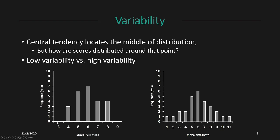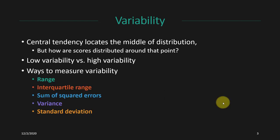In this example, we're looking at hypothetical data from rats, where we're looking at the number of attempts it took them to run a maze correctly. In one case, we have relatively low variability where the median score was 6 but scores only ranged from 4 to 8. In the other example, the median was also 6 but scores ranged from 1 to 11. So the measures of central tendency don't tell us the whole story — we need a measure of variability. We have different ways of measuring variability, and much like our different measures of central tendency, they have different strengths and weaknesses.